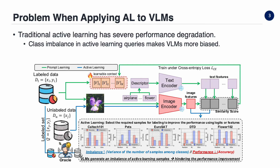Active learning is a technique that aims to maximize model performance by selectively sampling the most informative examples from an unlabeled dataset. To address our research question, we initially applied conventional active learning methods to vision language models. However, we observed a severe performance degradation caused by class imbalance in the selected queries. Furthermore, we discovered that this class imbalance in the active learning queries exacerbates the bias in vision language models.